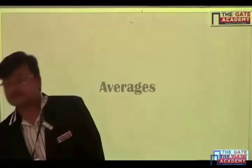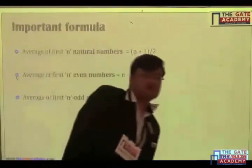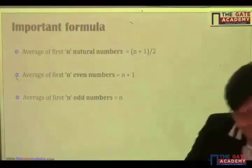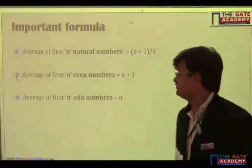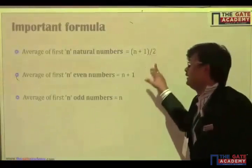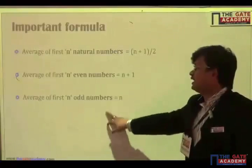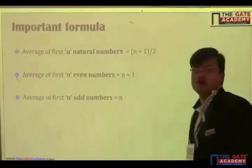Averages. Before starting a topic, please note down some formulas. Important formula. What is the first formula? Average of first n natural numbers is (n+1)/2. Average of first n even numbers is n+1. Average of first n odd numbers is n only.